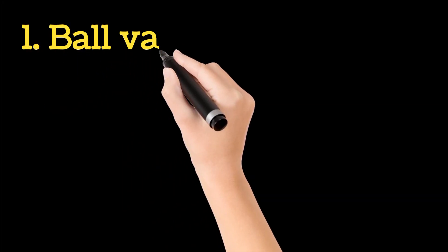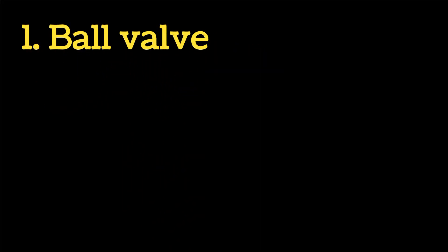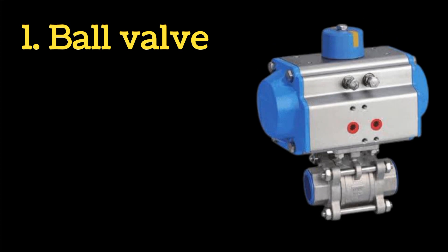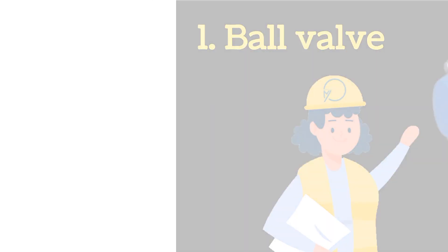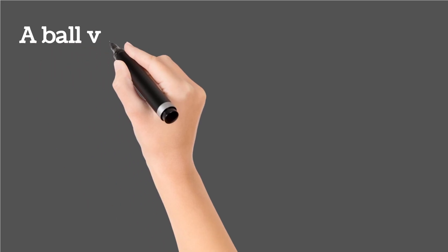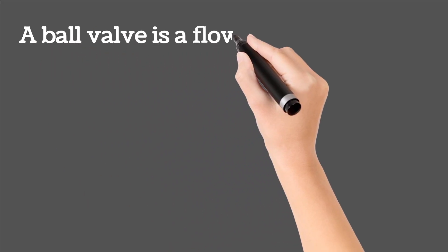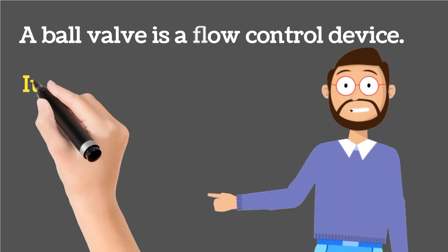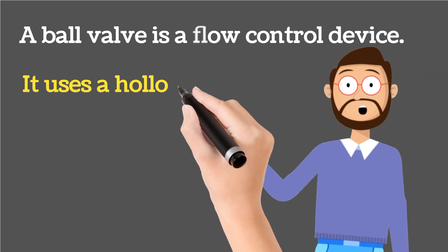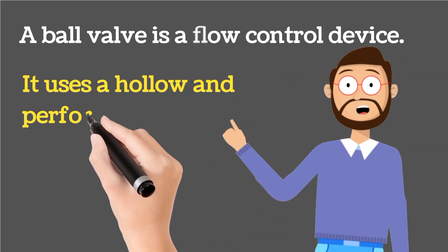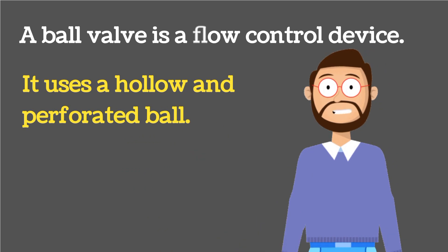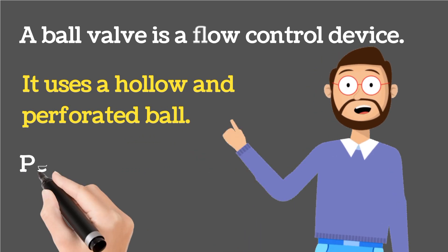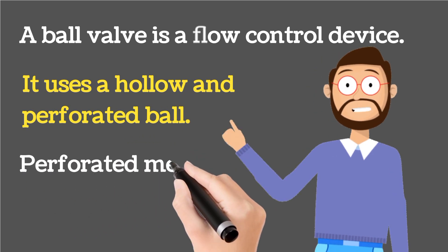First we will discuss the ball valve. How does it work? A ball valve is a flow control device. It has a hollow and perforated ball inside it — perforated means it has a hole.